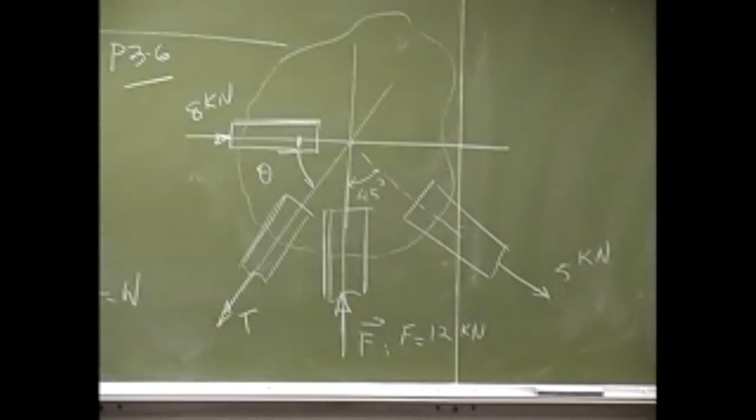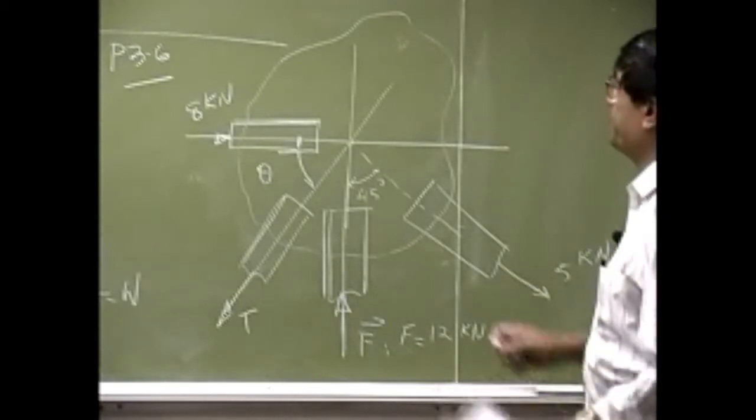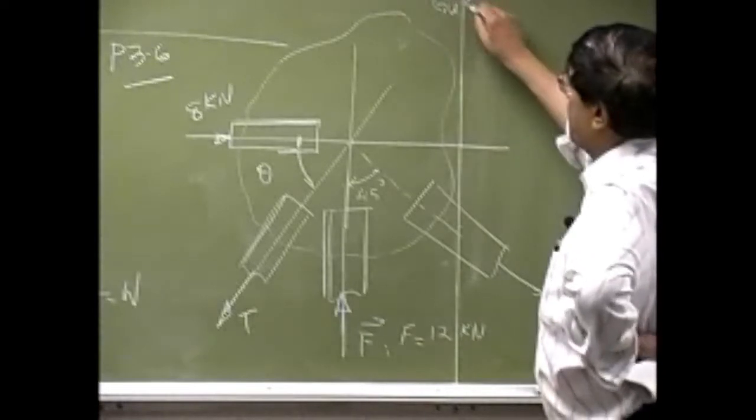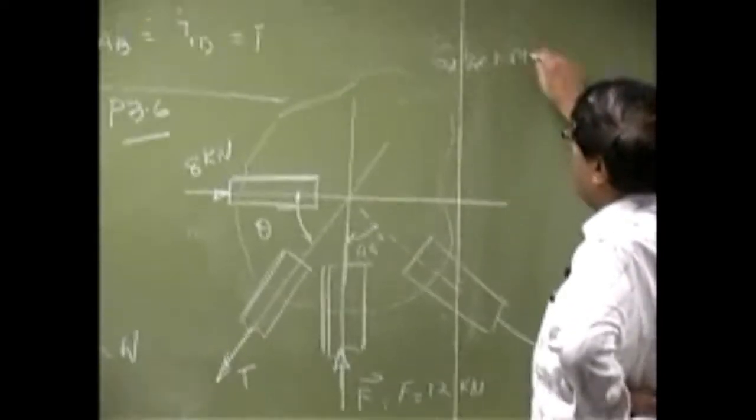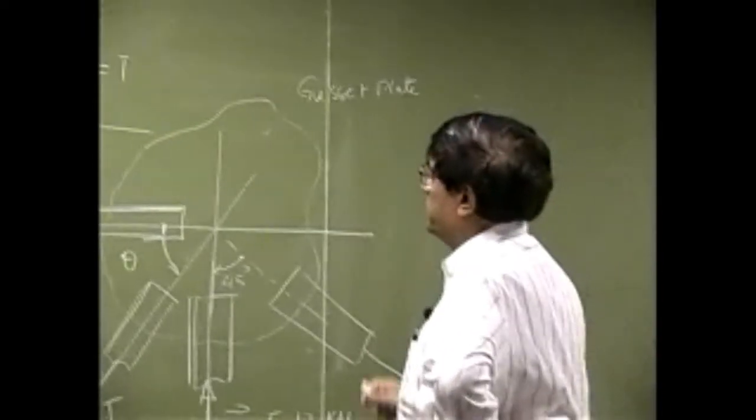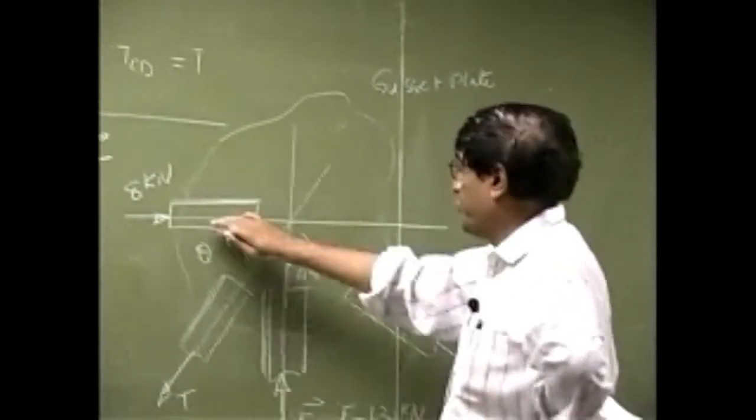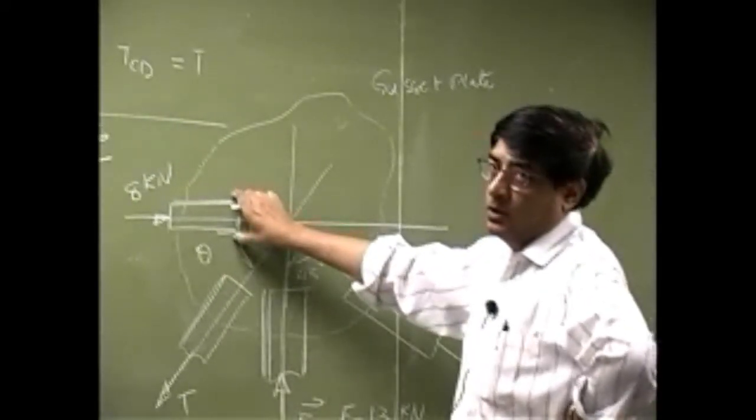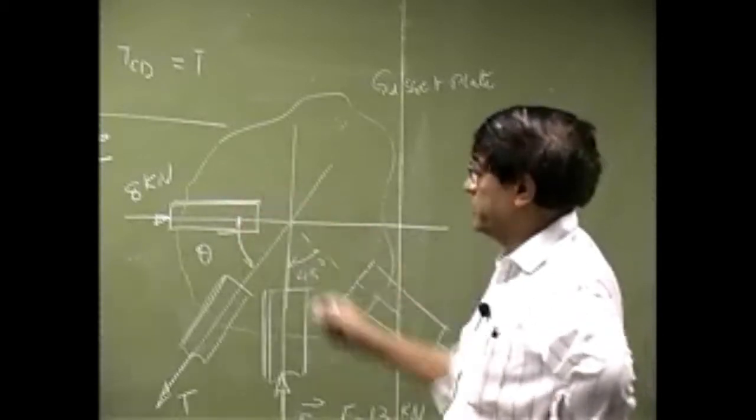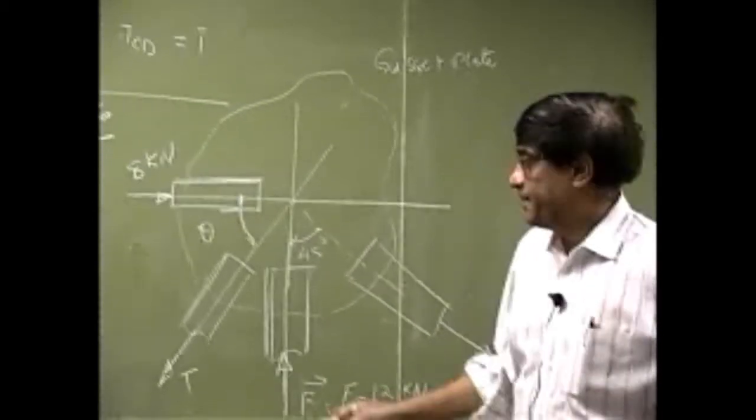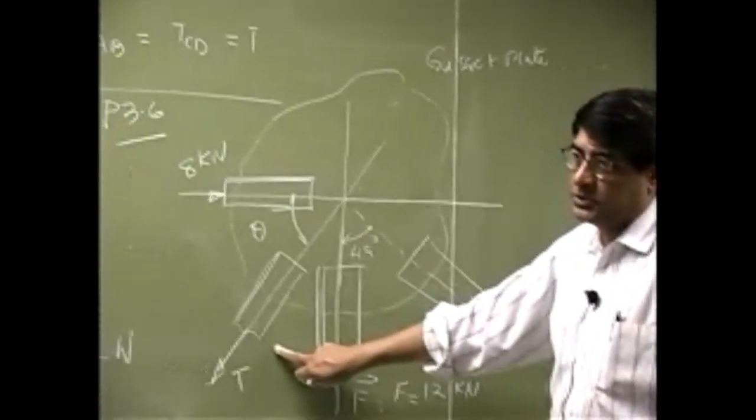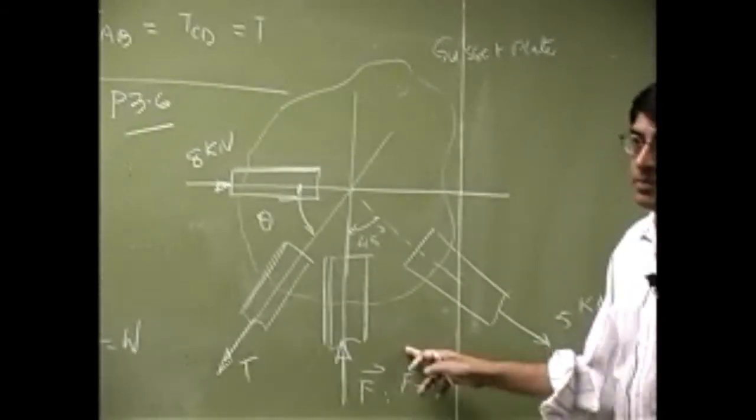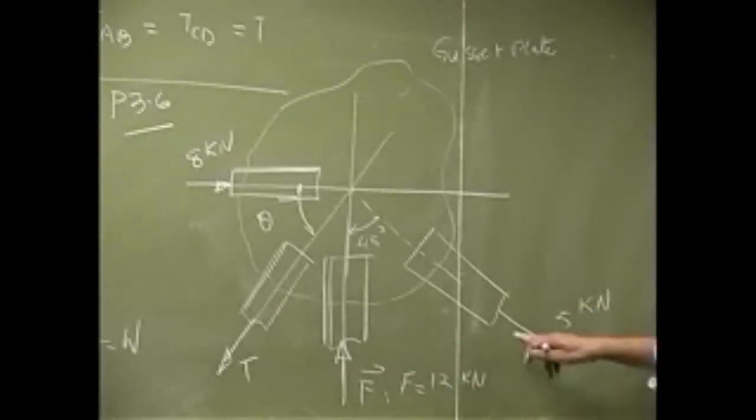So this is a truss connection and what you have is a cassette plate and on this plate you have four different members. This member here with the force as 8 kN, another member here with the tension T, and